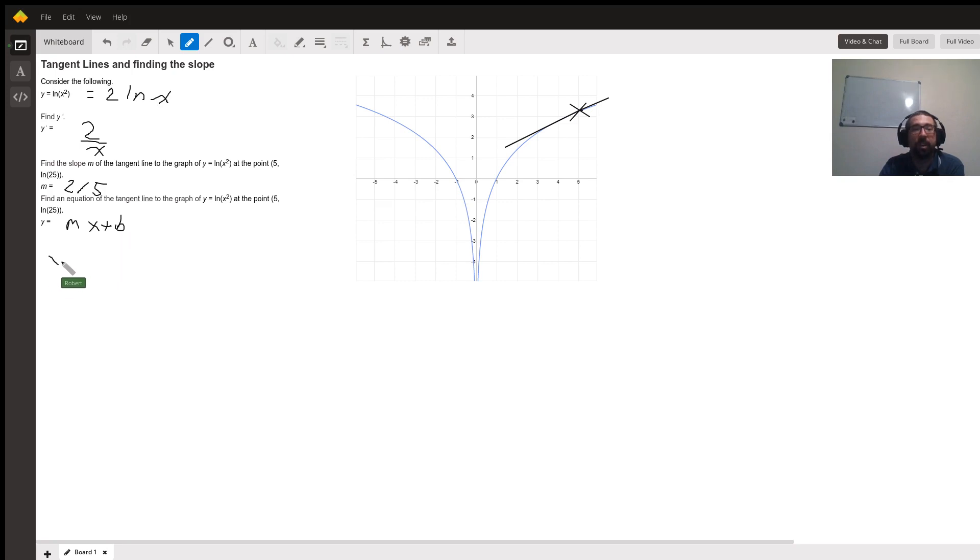You could do y equals 2 fifths, which is the slope that we found, x plus b. That's how I like to do it. I like to then plug in the numbers. We know y. We need to find out what b is, because y and x can change, but m and b are constants. We need to know what b is. So I plug in the point 5 and ln 25. So I get ln 25. And you could also do 2 ln 5, it would give you the same answer, because they're the same thing, is 2 fifths times 5 plus b.